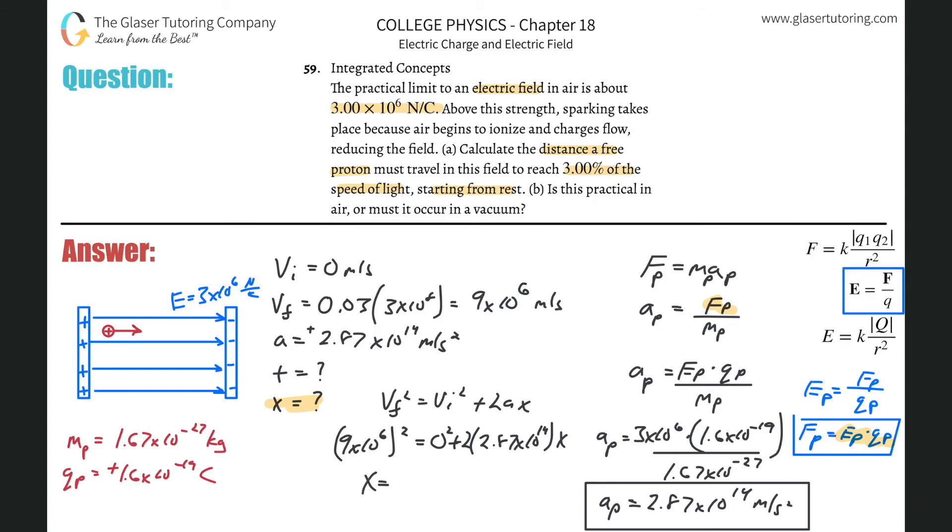Solve this now for x. So we get 9 times 10 to the 6th squared divided by parenthesis 2 times 2.87. Well, let me use the exact value. One second. I'm going to use the exact value for the acceleration there. So what was it? 2.87 we found? Wait, where was that now? Oh, no. Did I erase it? I erased it. So I'm just going to use the approximate. Oops. 2.87 times 10 to the 14th. That'll be good enough. And here we get now 0.141 meters. So that's how far it must travel to reach 3% of the speed of light. Not really that far. Right? So that's letter A.